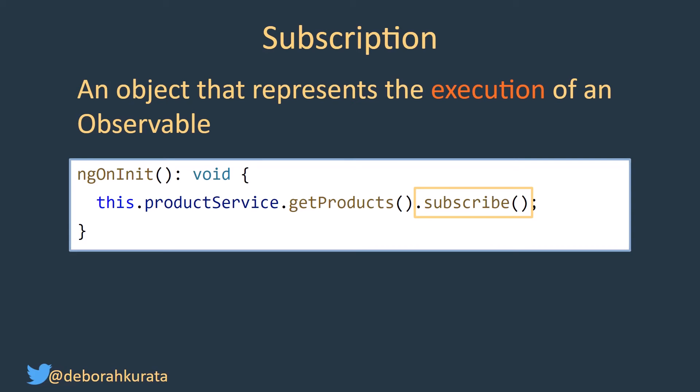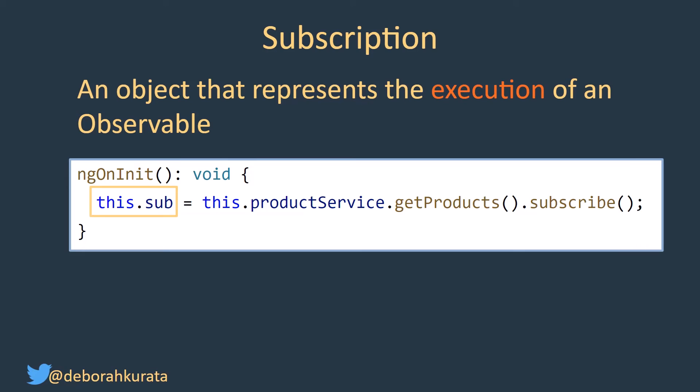Technically speaking, a subscription is an object that represents the execution of an observable. We add dot subscribe on there, and subscribe returns that subscription object, which we can assign into a variable.